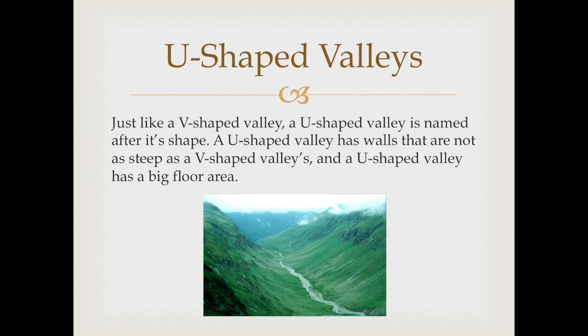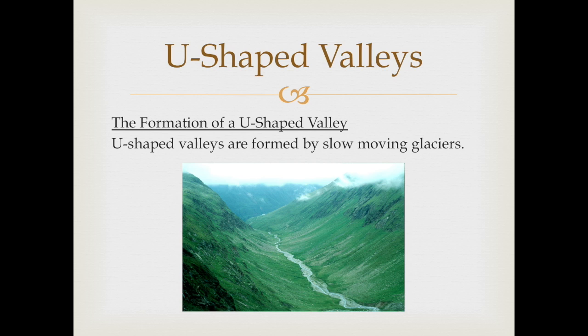U-shaped valleys are formed by slow-moving glaciers. A U-shaped valley can only be seen after the glacier has melted. It doesn't really matter how steep the glacier is — it's the size of the glacier that determines how big the valley is. Glaciers that are continually flowing and are large in size form wide, deeply cut U-shaped valleys.